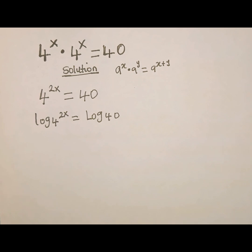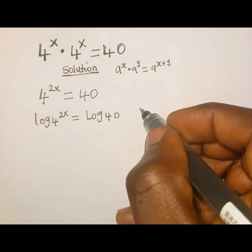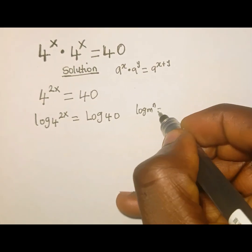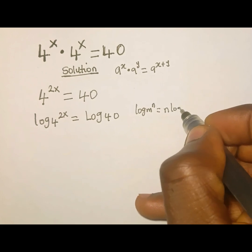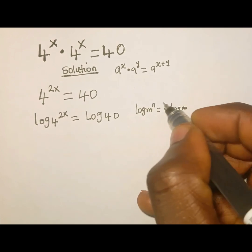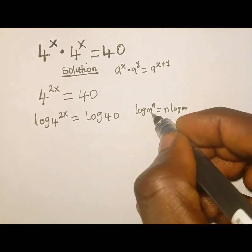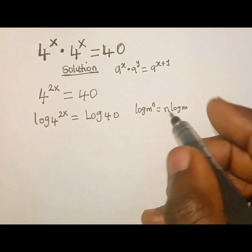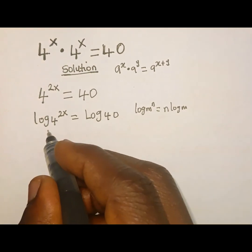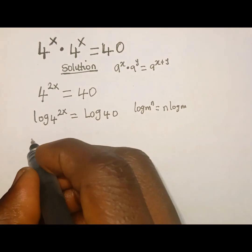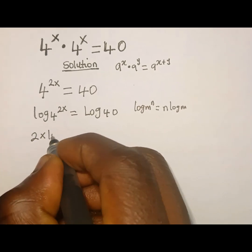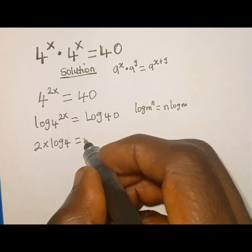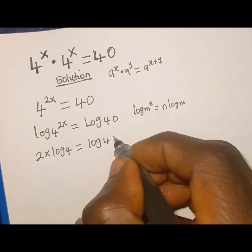Now we are going to recall the power property of logarithms. When we have log of m raised to the power of n, this is the same as n times log m. The power of the term you are taking the log of comes down to multiply the log. Applying this property to the left hand side, 2x comes down to multiply log of 4 to the base of 10, which is equal to log 40.